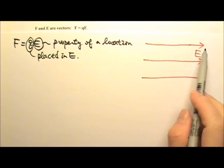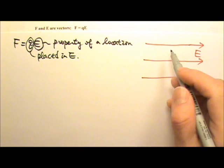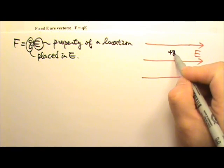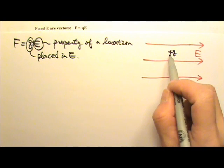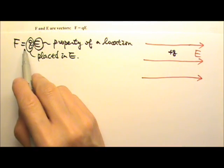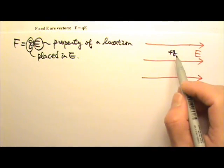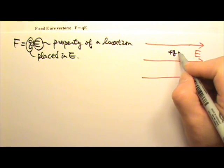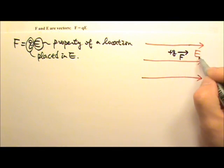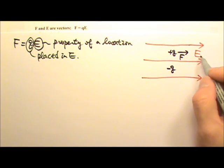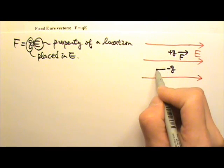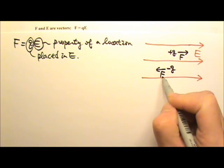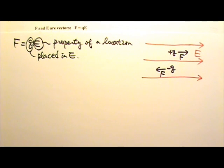For example, if I have an electric field going to the right and I put a positive Q in this electric field, the electric force acting on this positive charge would be F equals Q times E, and the force will be in the same direction as the electric field. If I put a negative charge in this electric field, the force will be in the opposite direction to the electric field.